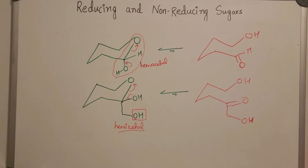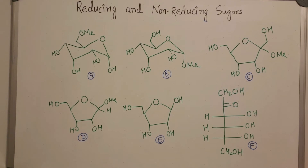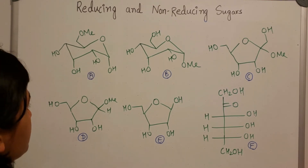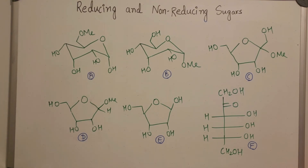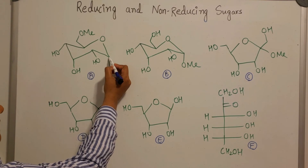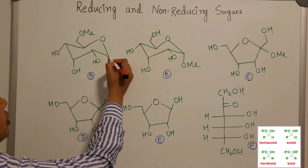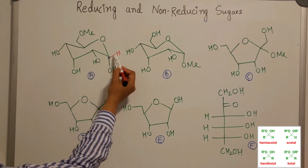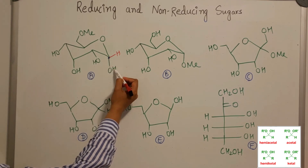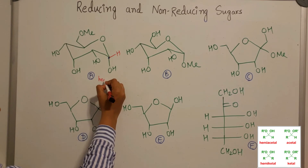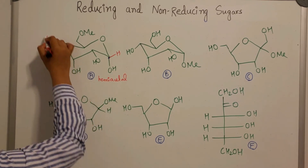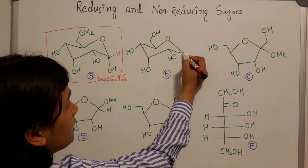Now let's solve some IIT JAM exam questions asking us to identify all reducing sugars. For compound A, looking at the anomeric center: the other group is H, so this is coming from an aldehyde (R and H). One hydroxide is free and the other is protected — this is a hemi-acetal, so this is a reducing sugar. For compound B, at the anomeric center the other group is again H (aldehyde), but both hydroxides are protected — this is an acetal, so it is not a reducing sugar.